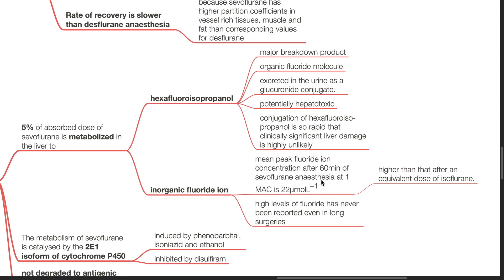Inorganic fluoride ion mean peak fluoride ion concentrations after 60 minutes of Sevoflurane anesthesia at 1 MAC is 22 micromole per liter. It is higher than that after an equivalent dose of isoflurane. Higher levels of fluoride have never been reported even in long surgeries and it is clinically insignificant.